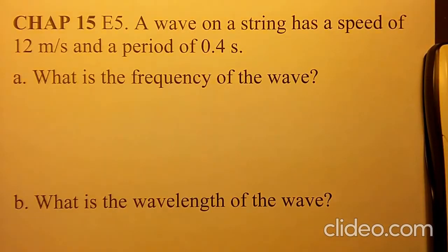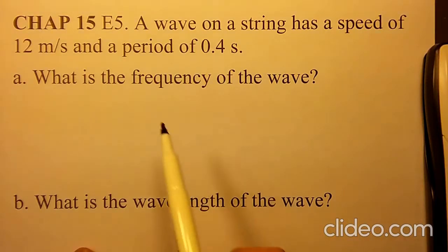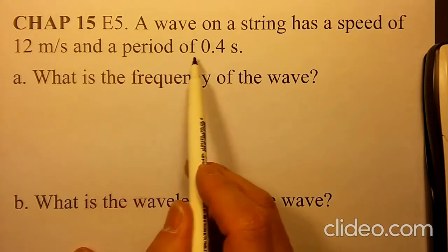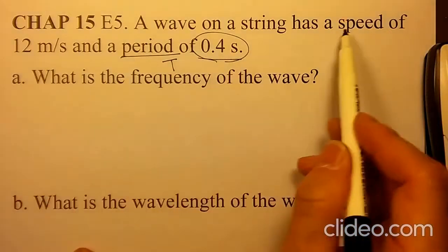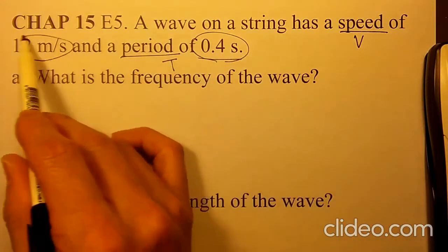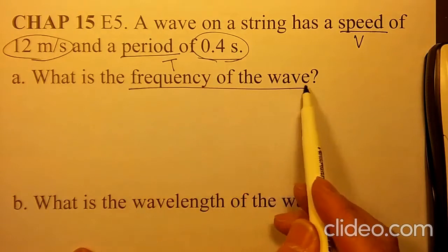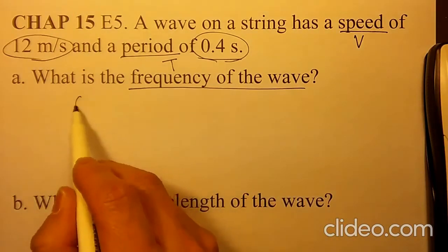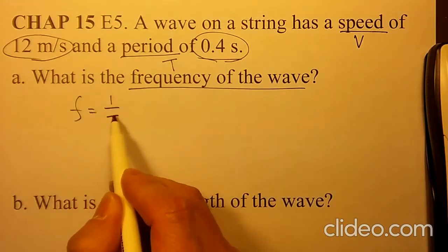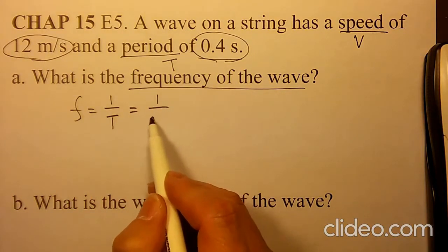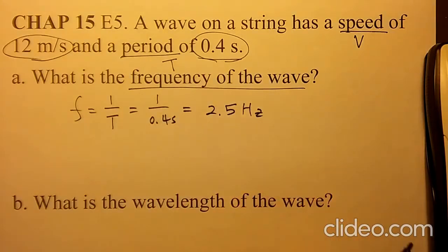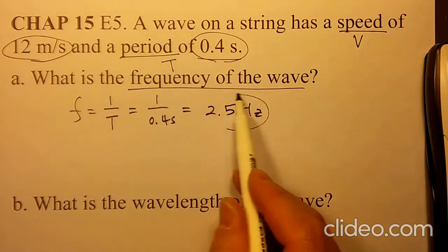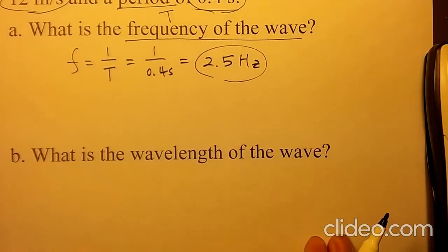Chapter 15 E5. A wave on a string has a speed of 12 meters per second and a period of 0.4 seconds. The period is T and the speed V is 12 meters per second. The frequency can be found as 1 over T, so 1 over 0.4 seconds becomes 2.5 hertz as your frequency for this wave.